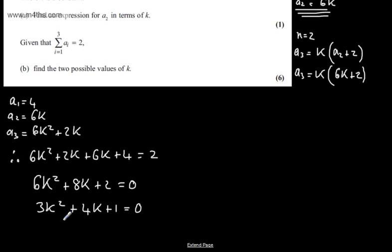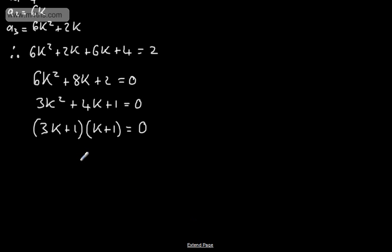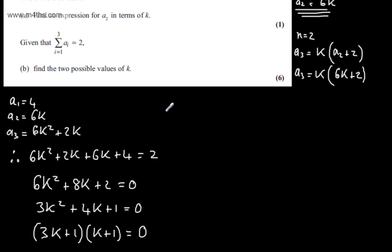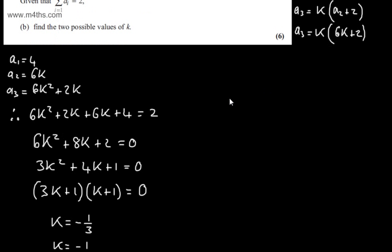This is a quadratic in k that we can factor, and we'll have 3k plus 1 multiplied by k plus 1 equals 0. Solving for k we can see that k equals minus 1 third or k equals minus 1. This gives us our two possible values of k, and there are six marks in total.